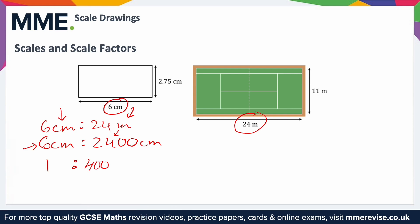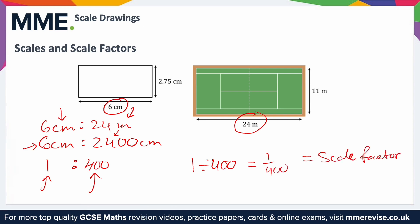From there we can find the scale factor. The scale factor is the number you multiply an actual dimension by to get the dimension on the scale drawing. To find it, divide 1 by 400. This gives a very small decimal, so we'll leave it as a fraction: the scale factor is 1 over 400. The scale is 1 to 400, and the scale factor is 1/400.